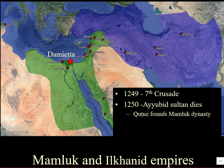We often call it a dynasty, but they are not typically the same family. They are soldiers and warriors who are purchased as youths from the steppes — they are slaves, but very influential and powerful slaves who can end up running the country.